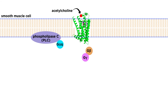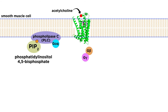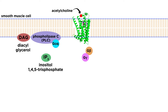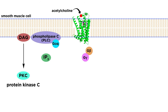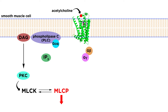G-alpha-q then activates the membrane-bound enzyme phospholipase C, or PLC. PLC hydrolyzes phosphatidylinositol-4,5-bisphosphate, referred to as PIP2, into diacylglycerol, or DAG, and inositol-1,4,5-trisphosphate, referred to as IP3. DAG remains membrane-bound and activates protein kinase C, or PKC. Protein kinase C negatively regulates myosin light chain phosphatase, leading to a shift favoring myosin light chain phosphorylation. As we already discussed, phosphorylation of myosin light chain leads to greater smooth muscle contractility.